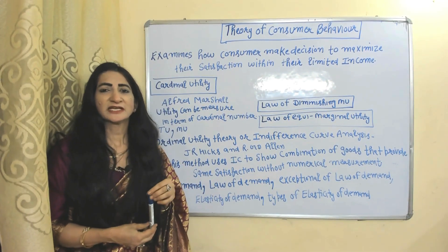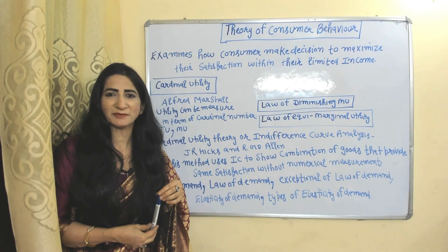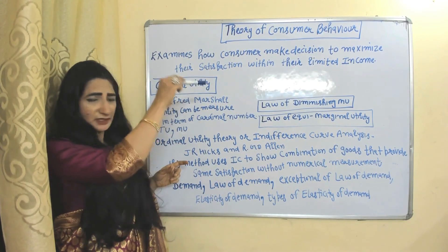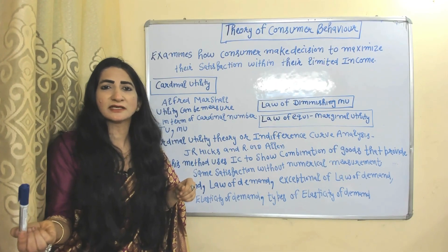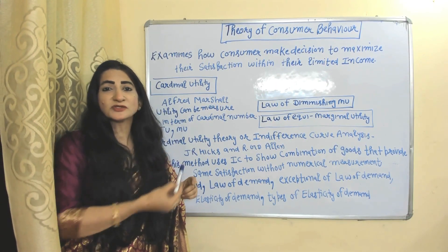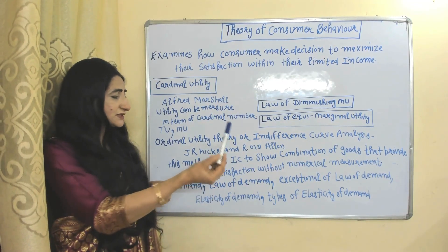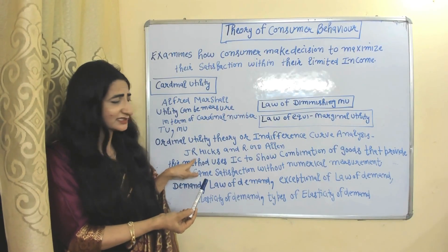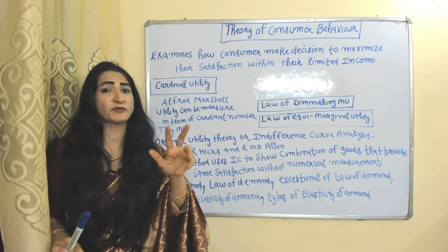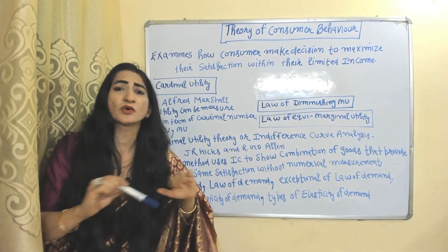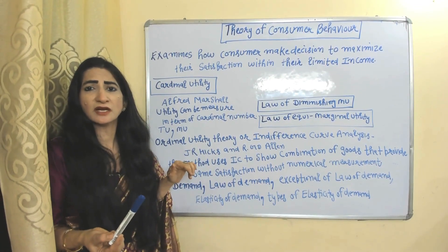Theory of consumer behavior explains consumer decisions to maximize their satisfaction within their limited income. Under this topic, we study cardinal utility, given by Alfred Marshall, which measures utility in terms of cardinal numbers like 1, 2, 3, 4, and includes concepts of total utility and marginal utility. Ordinal utility theory, also called indifference curve analysis, was given by J.R. Hicks and R.G.D. Allen, using the concept of indifference curves, which show combinations of two goods giving the same level of satisfaction without any numerical measurement.